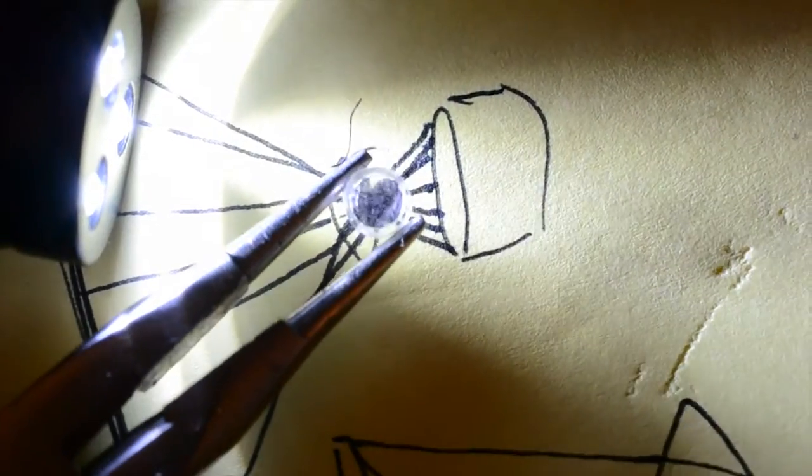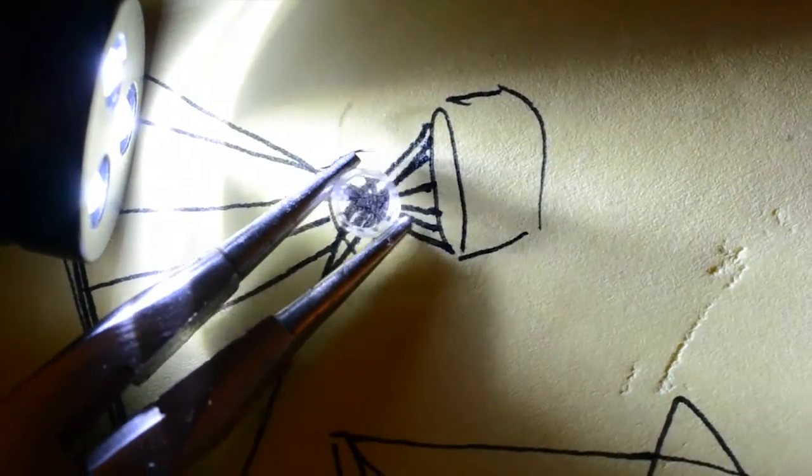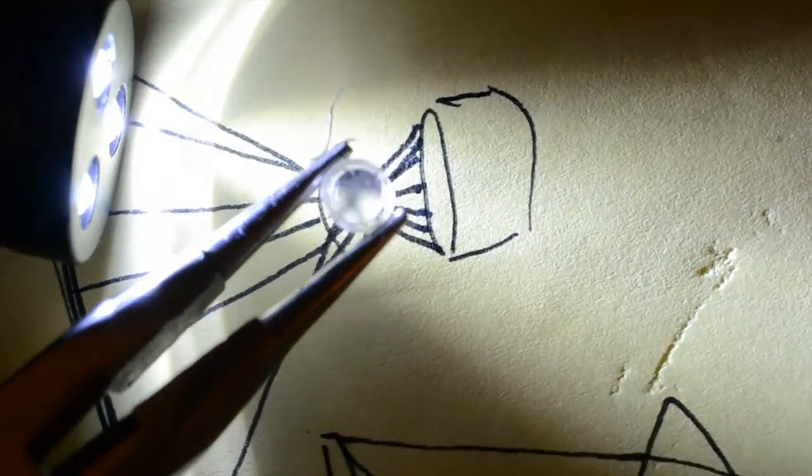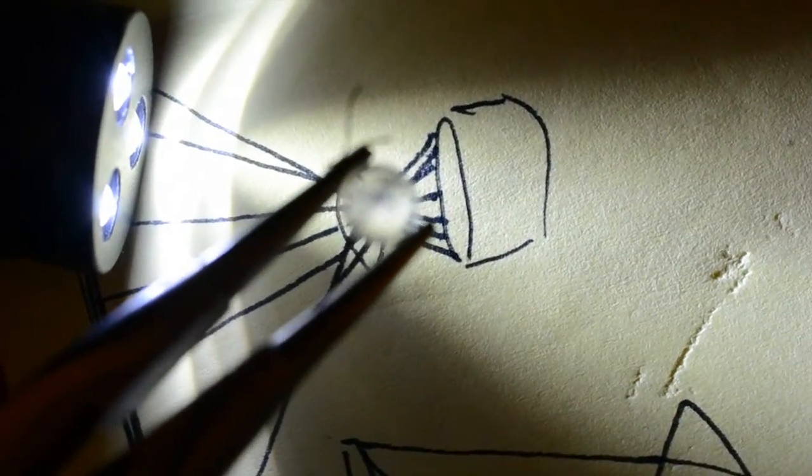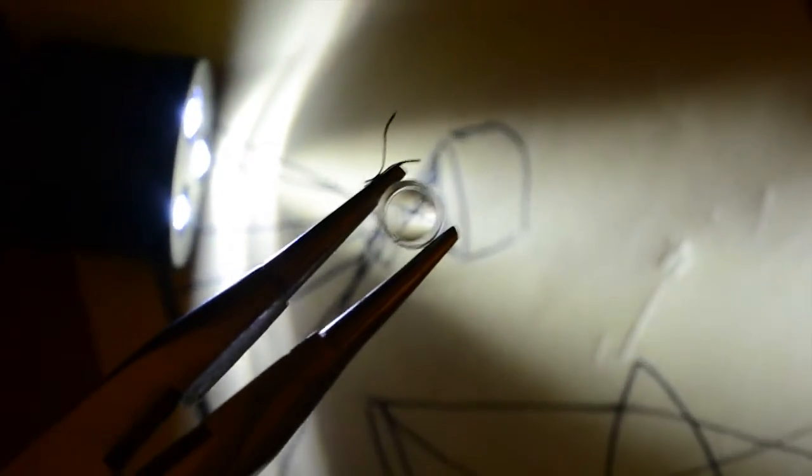For instance, we can see that when we hold the lens close to an object, it can act as a magnifying glass. But as we move it further and further from the page, something odd starts to happen.